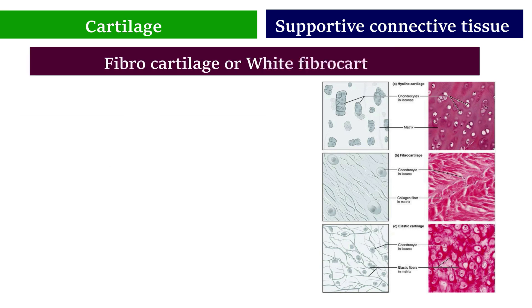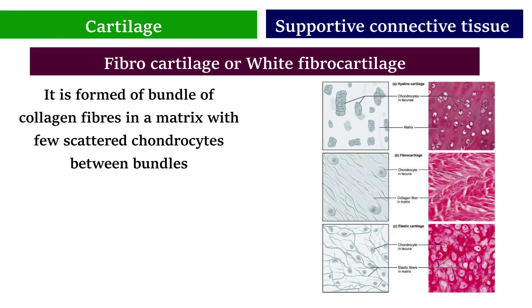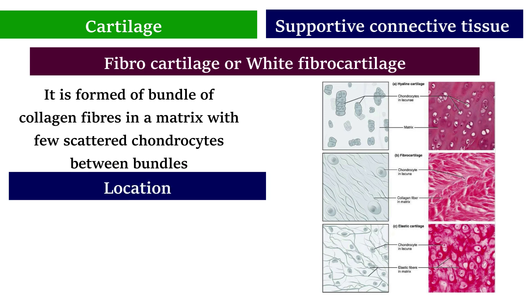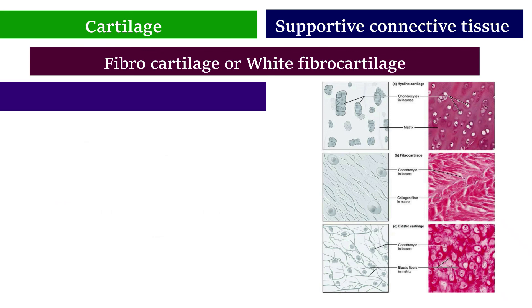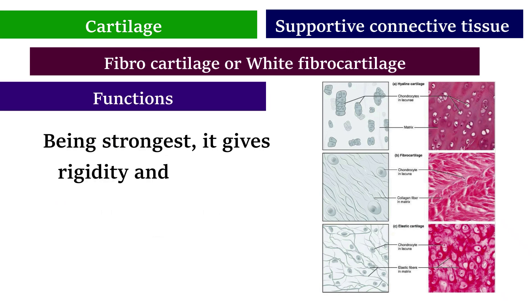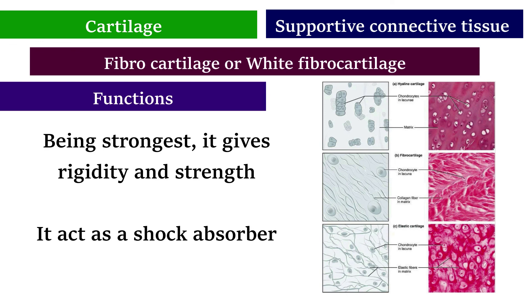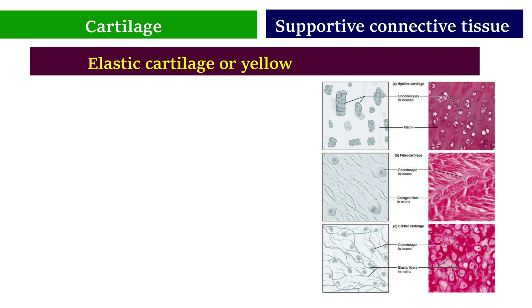Fibrocartilage, or white fibrocartilage, is formed of bundles of collagen fibers in a matrix with few scattered chondrocytes between the bundles. It is located in intervertebral discs, the semilunar cartilage of the knee joint, and other intra-articular discs. Being the strongest cartilage, it gives rigidity and strength and acts as a shock absorber.